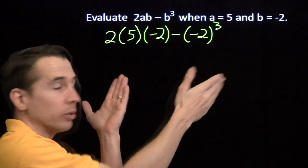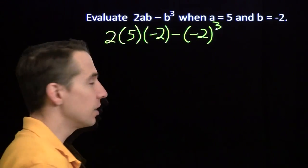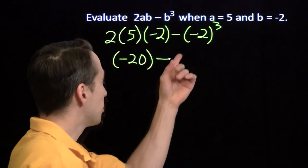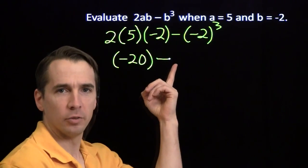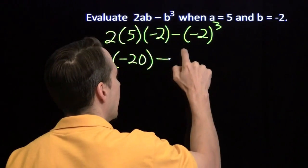Now we can go ahead and compute this. So with this product here, 2 times 5 is 10. 10 times negative 2 gives us negative 20 over here. And then we're going to subtract the cube of negative 2. Negative 2 times negative 2 is 4. 4 times negative 2 gives us negative 8.